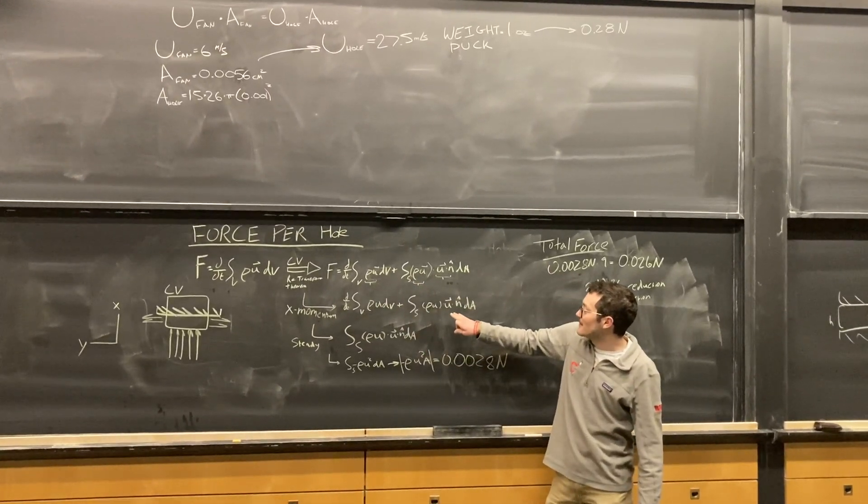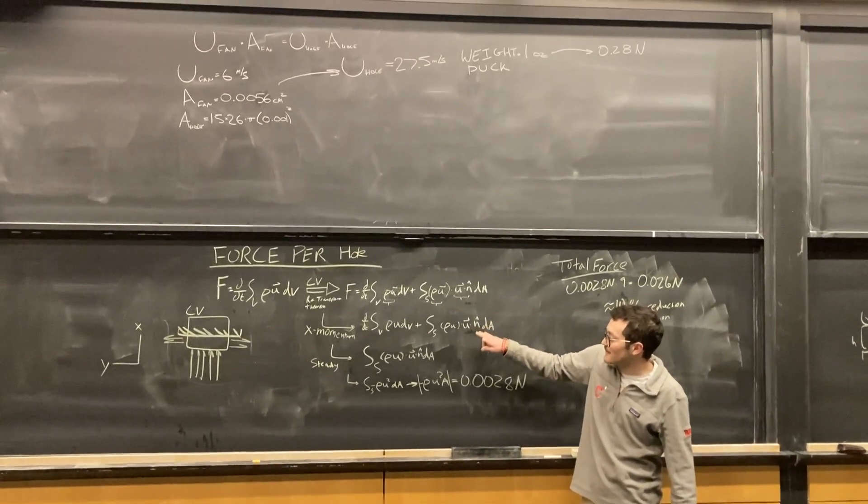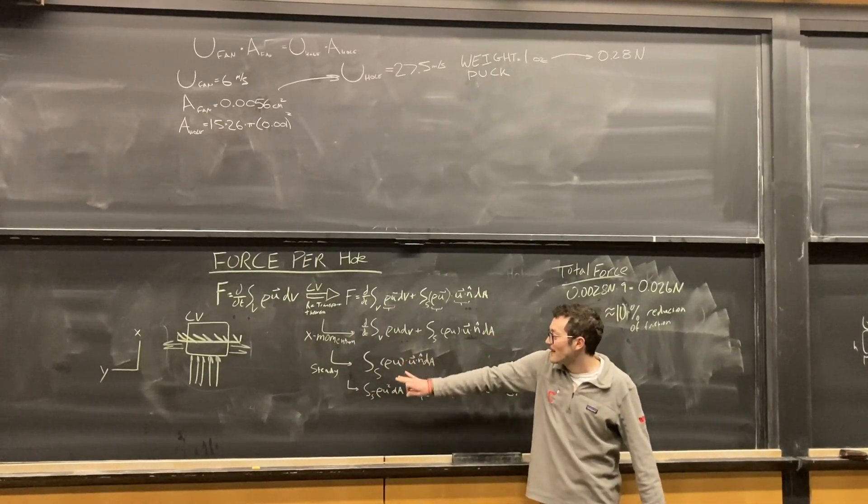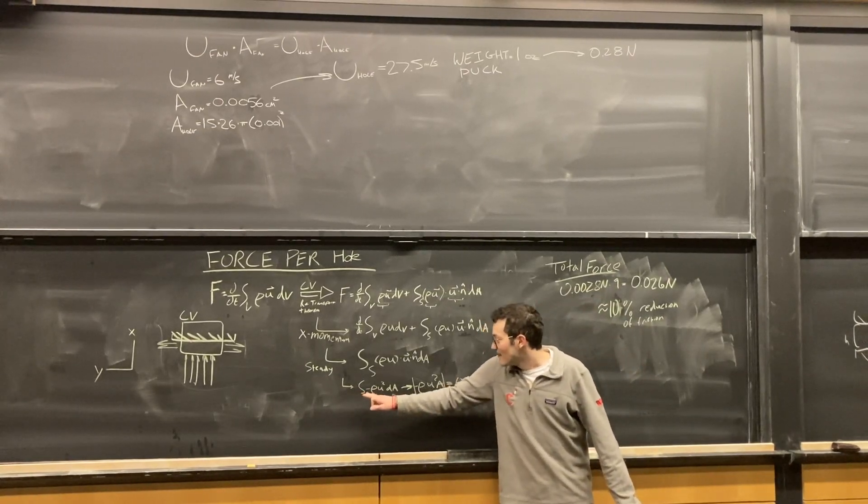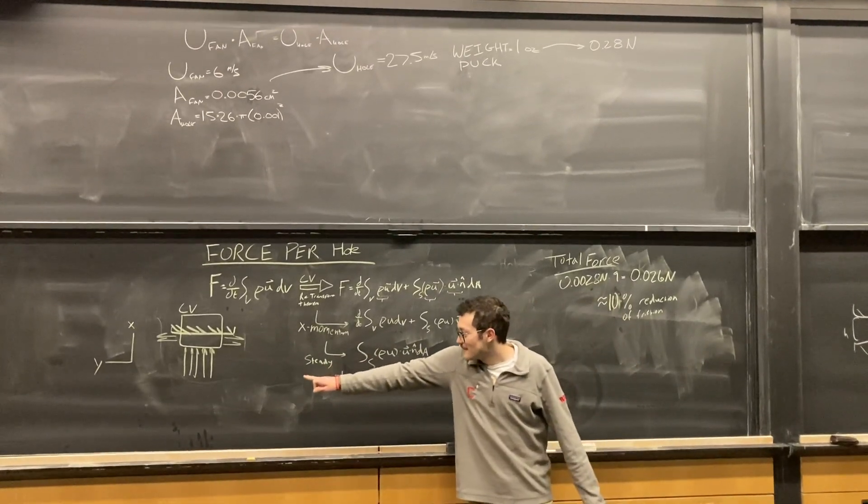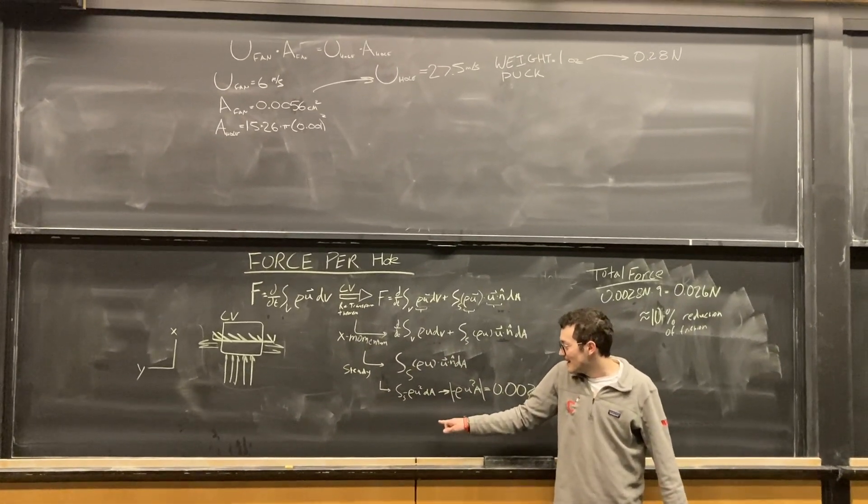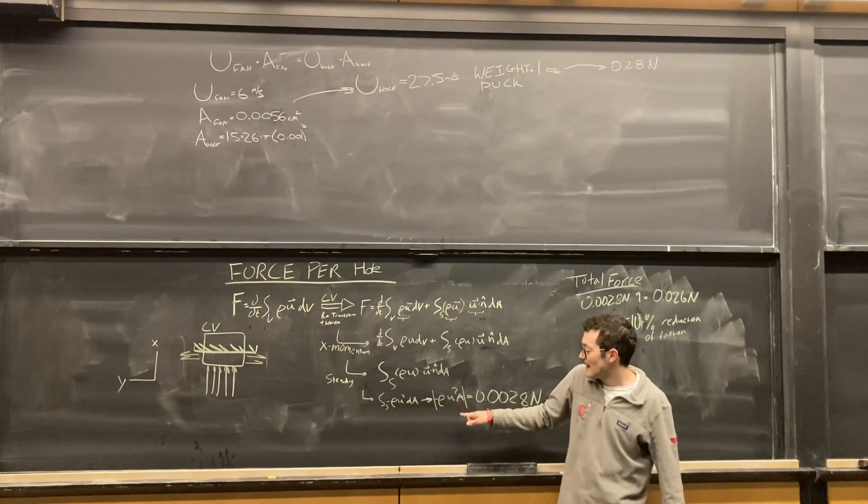Next we assume the flow is steady, so we get rid of the derivative term and we're just left with the second term across the surface. Then using the fact that the speed of the fluid is entirely in the x direction, we can simplify this dot product here and get that the force on the puck will be rho u squared a.